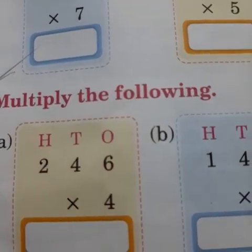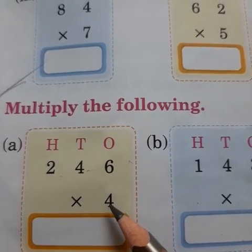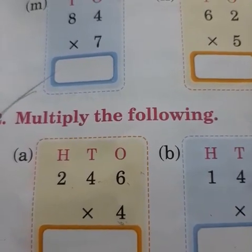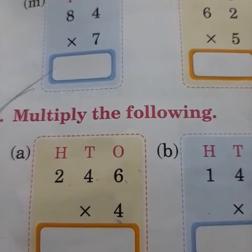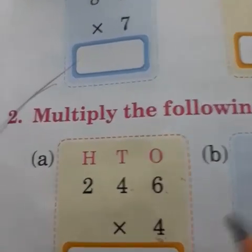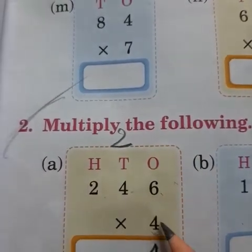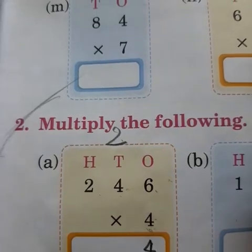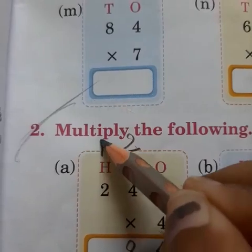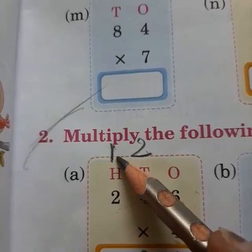Now for a three-digit number: 246 into 4. We read the table of 4 six times: 4 sixes are 24. We write 4 and carry 2. Then 4 fours are 16, add the carried 2 to get 18 — write 8 and carry 1. Then 4 twos are 8, add the carried 1 to get 9. These are the multiplications.